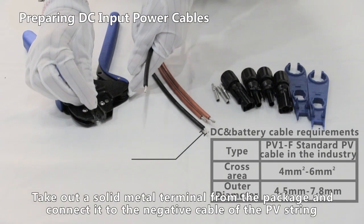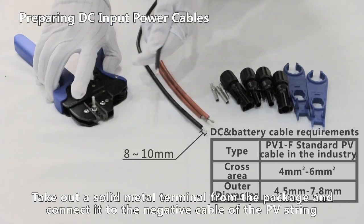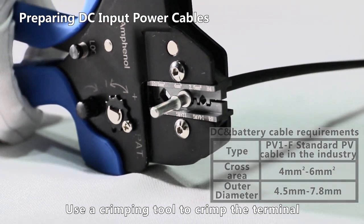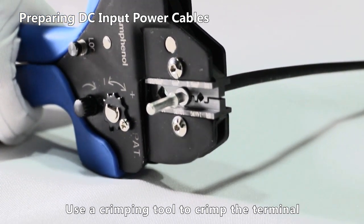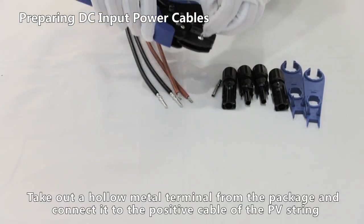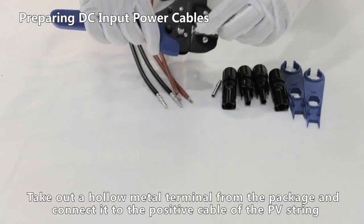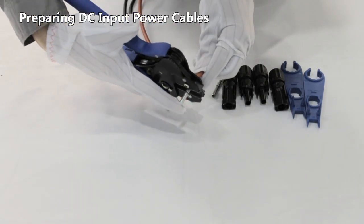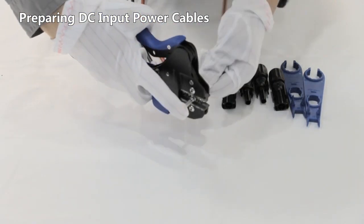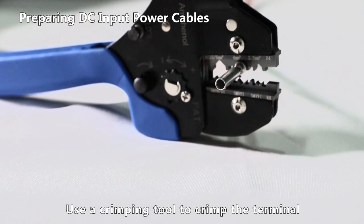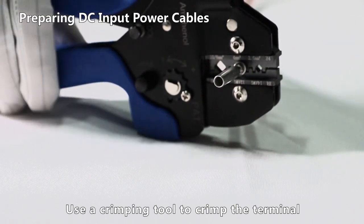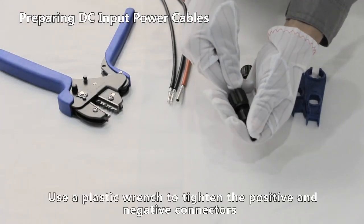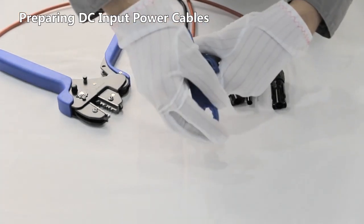Take out a hollow metal terminal from the package and connect it to the negative cable of the PV string. Use a crimping tool to crimp the terminal. Take out a hollow metal terminal from the package and connect it to the positive cable of the PV string. Use a crimping tool to crimp the terminal. Use a plastic wrench to tighten the positive and negative connectors.